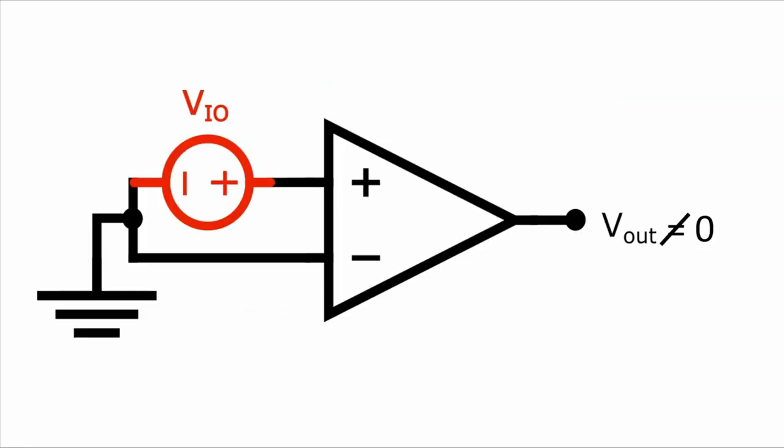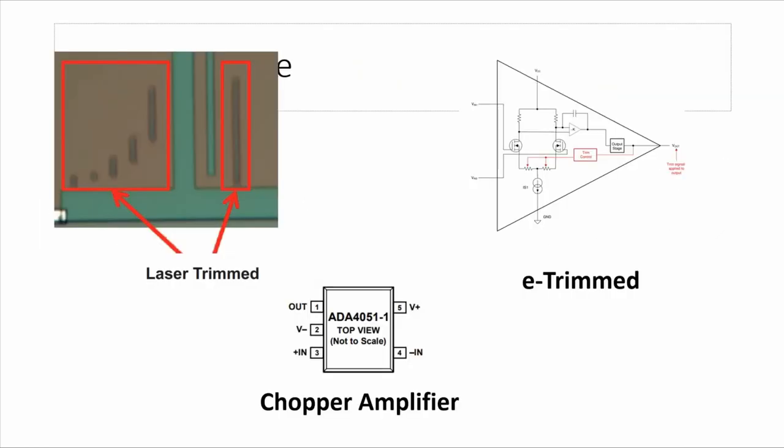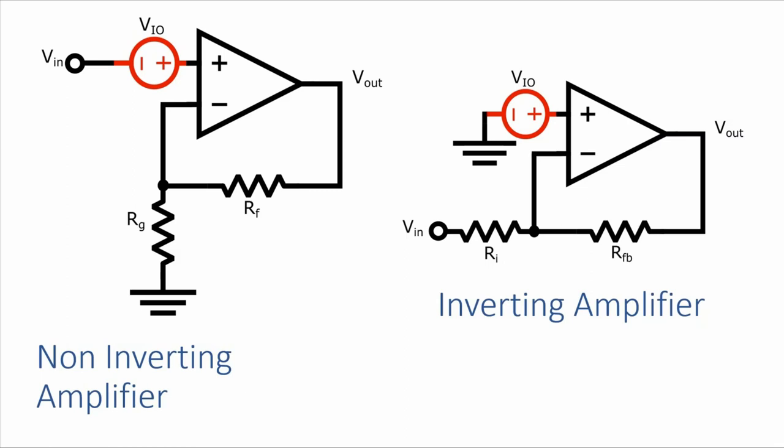The bottom line in all of this is that the input offset voltage can be an issue for your circuit, but it can be managed by either modifying your circuit using one of the methods that I've talked about, or by selecting an op-amp with an offset voltage that is already low enough for your requirements. So that should give you a better understanding of the input offset voltage and what to do about it.